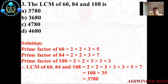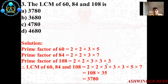Now we discuss the solution. The prime factorization of 60 is 2 × 2 × 3 × 5, the prime factorization of 84 is 2 × 2 × 3 × 7, and the prime factorization of 108 is 2 × 2 × 3 × 3 × 3. The LCM of 60, 84, and 108 is 2 × 2 × 3 × 3 × 3 × 5 × 7, which equals 108 × 35, giving us 3780.